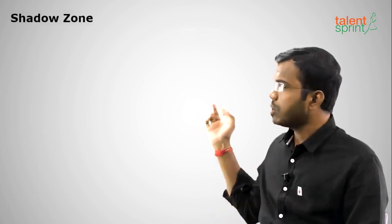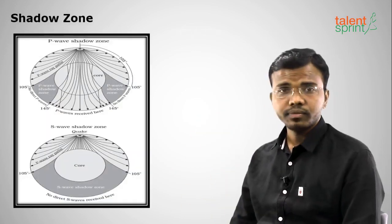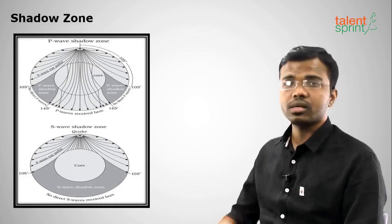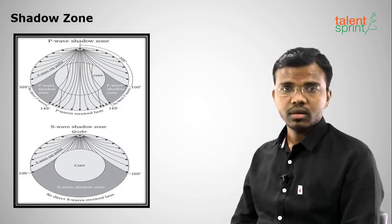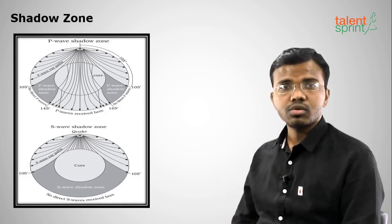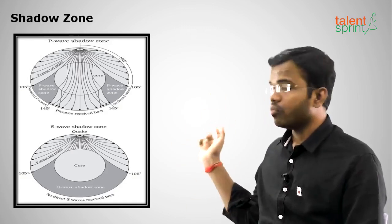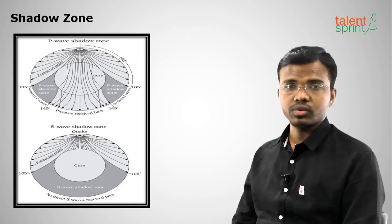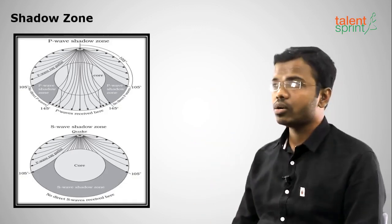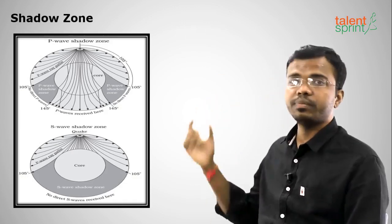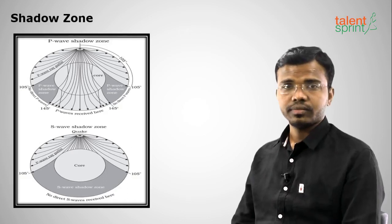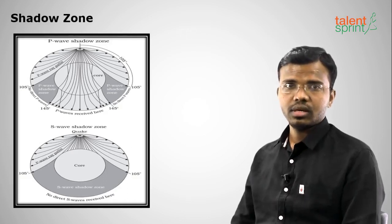Moving on to shadow zone — the area where these waves will not appear. Hope you can see clearly on the diagram. The shadow zone of P waves is from 105 to around 140 degrees. The shadow zone of S waves is greater than 105 degrees, so the shadow zone of S waves is larger than that of P waves. In that zone, these P waves will not occur on the earth's surface.